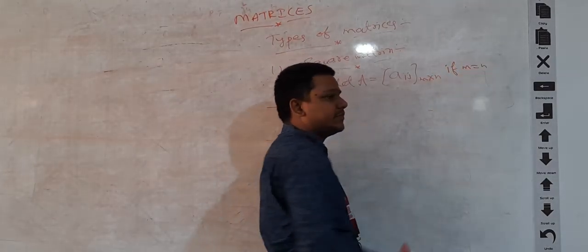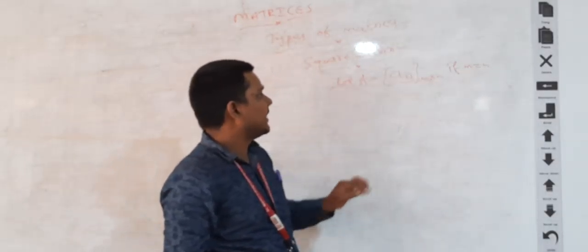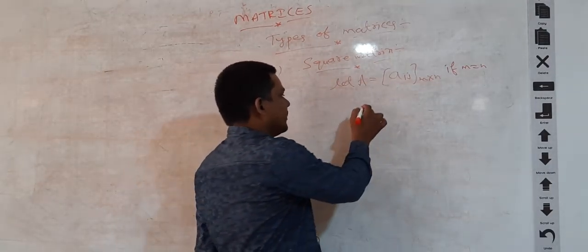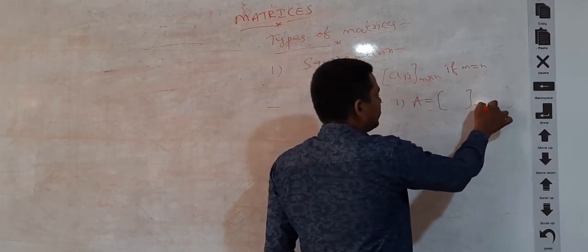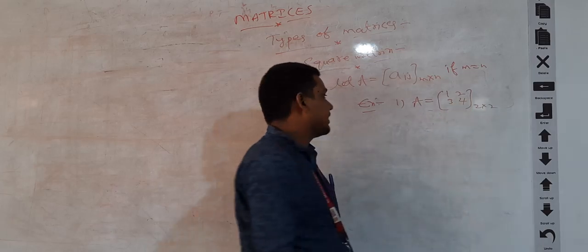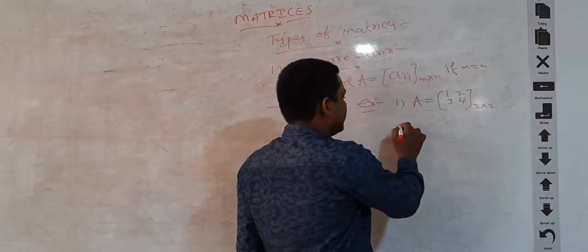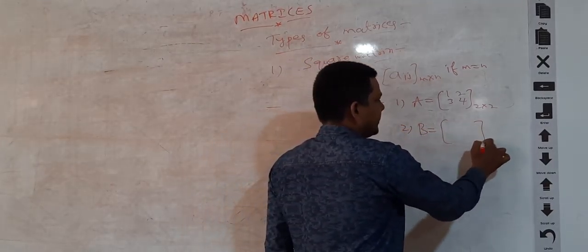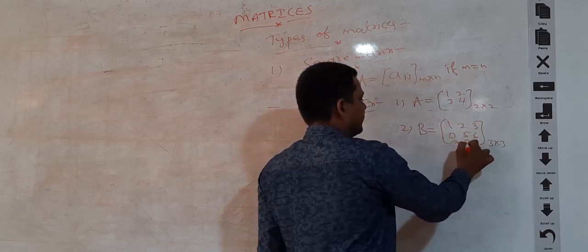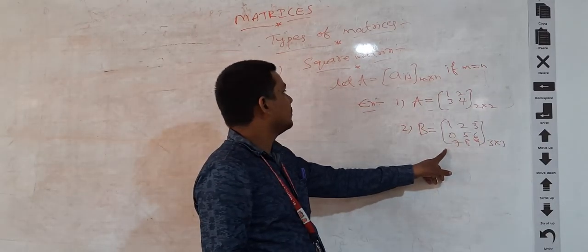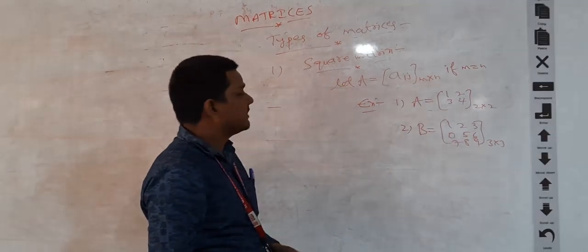The condition for a square matrix is: if m is equal to n, meaning the number of rows m equals the number of columns n, then matrix A is said to be a square matrix. For example, A is a 2 by 2 matrix with elements 1, 2, 3, 4 — a matrix of order 2 where the number of rows equals the number of columns. Similarly, B is a 3 by 3 matrix with elements 1, 2, 3, 0, 5, 6, 7, 8, 9, where number of rows equals number of columns. These are examples of square matrices.